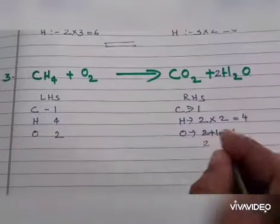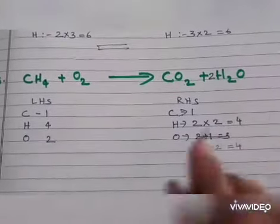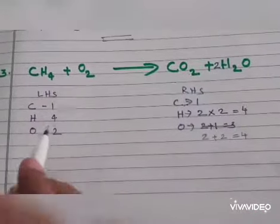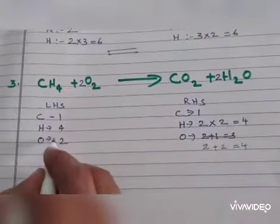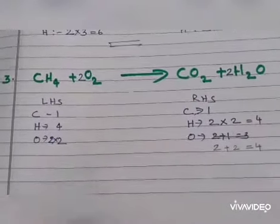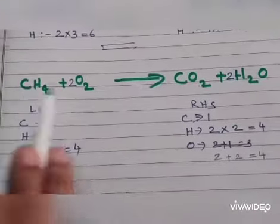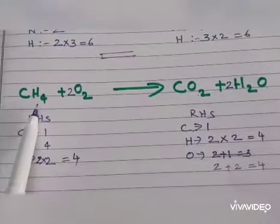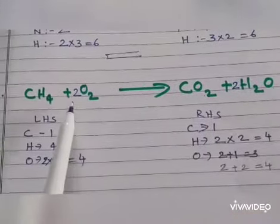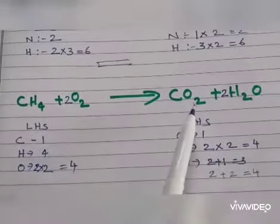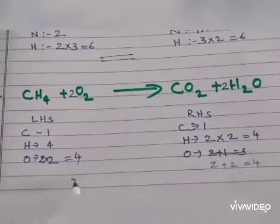So we have to change in LHS: 2 into 2, so 4. Yeah, 1 here also, 1 C, 4 hydrogen here on LHS. RHS 4 hydrogen, 2 into 2, 4 oxygen. Here also 2 plus 2, 4 oxygen atoms. Now this is a balanced equation.